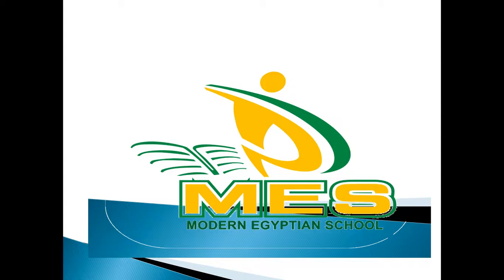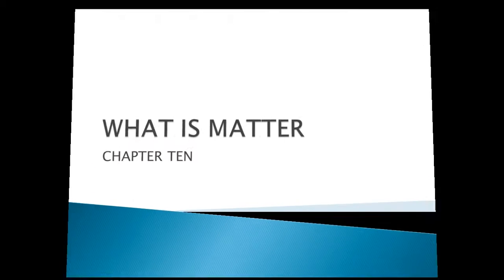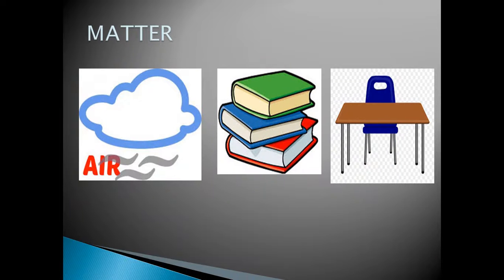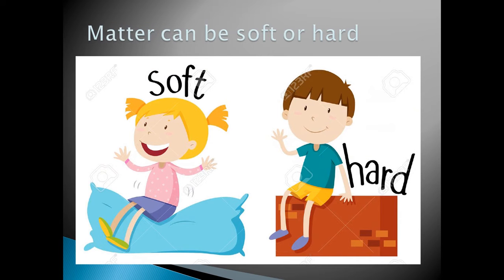Hello, good one! Today we are going to study a new chapter — Chapter 10: What is matter? Everything around you is matter. Toys that you play with are matter, balloons are matter, water you drink is also matter, air around you is matter, books that you read are matter, this chair — everything around you is matter.